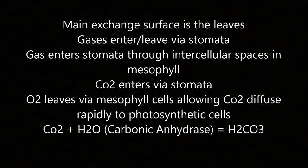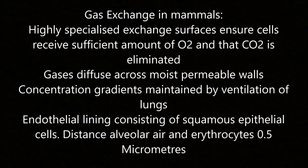CO2 plus water, with carbonic anhydrase, gives carbonic acid H2CO3. In mammals, highly specialised exchange airways ensure cells receive sufficient O2 and CO2 is eliminated. Gas diffuses across moist permeable walls and concentration gradients are maintained by ventilation of the lungs. The endothelial lining consists of squamous epithelial cells, and the distance to alveolar air is up to 0.5 micrometres.